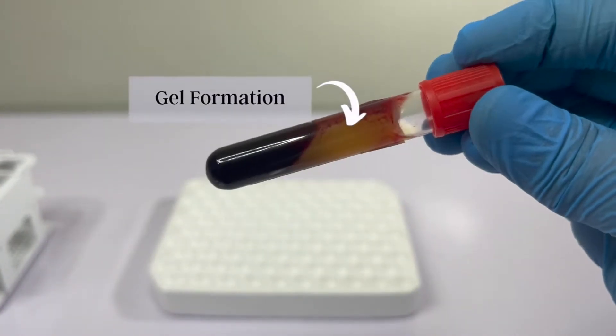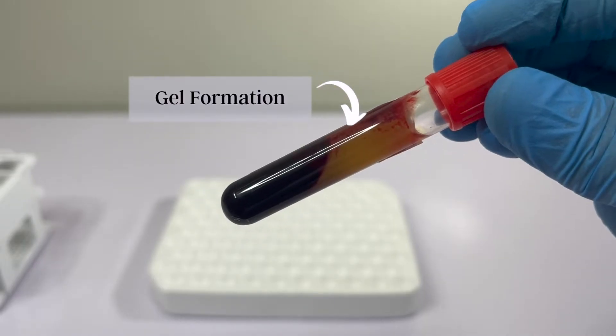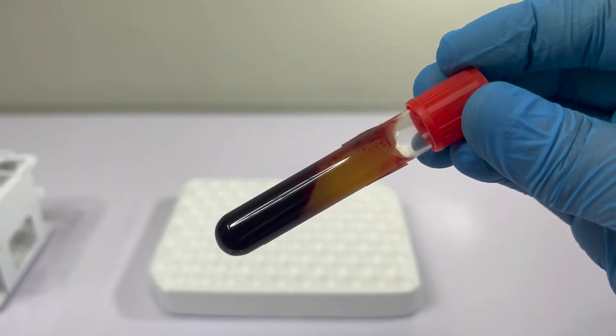Oftentimes, after centrifugation, you will encounter a gel-like substance in your tube which prevents you from collecting the serum.